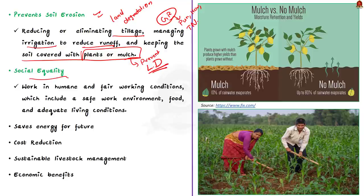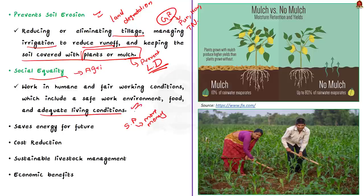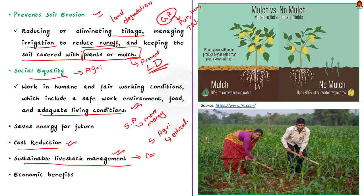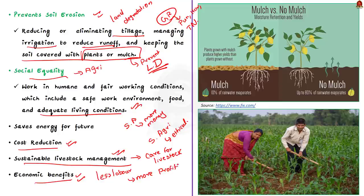The final advantage is social equity. Practicing sustainable agricultural techniques benefits workers as they are offered more money because of the quality of products they produce. They also work in humane and fair working conditions, including a safe work environment, food, and adequate living conditions — in essence, sustainable agriculture is ethical in nature. Additionally, sustainable agriculture helps in cost reduction through cost-effective farming practices, ensures better care for livestock, and has economic benefits since it requires less labor, allowing higher profits for farmers.